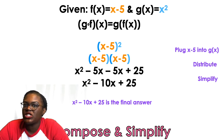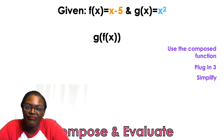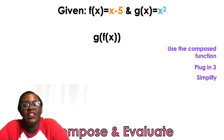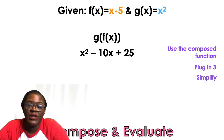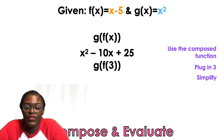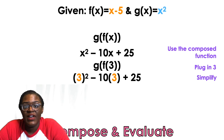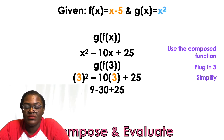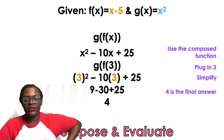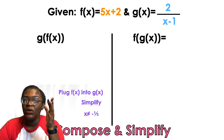After distributing, the composed function is x squared minus 10x plus 25. Sometimes they ask you to compose the functions and then find the value. Now plug 3 into that: 3 squared minus 10 times 3 plus 25 gives us 9 minus 30 plus 25, which equals 4. So 4 is the final answer.